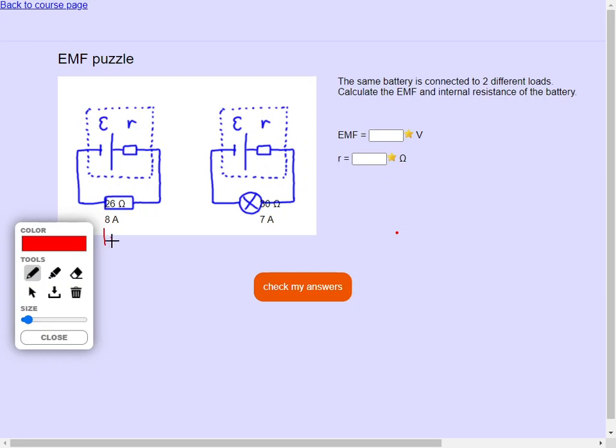The first point is we can work up the load EMF in each of these circuits. The first load EMF is 6 times 8, which is 208 volts. The second one is 210 volts.